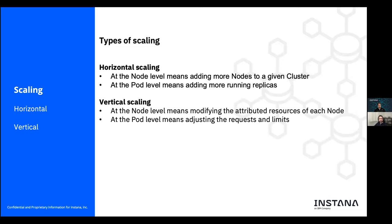Moving forward, let's talk about scaling. There are two different types of scaling in Kubernetes. Horizontal scaling has two different meanings depending on whether it applies to nodes or pods. At the node level, it means adding more nodes to a given cluster, so you have more servers to allocate workloads. At the pod level, it means adding more running replicas to an application — for example, if you have an application taking requests from end users and performance is degrading, you spin up more replicas to handle more requests.